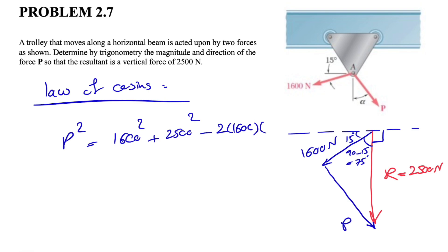...the first vector times the second one, and the angle would be the angle between 1600 and 2500, which is 75 degrees. So it will be cosine of 75 degrees. If we calculate this, we'll get 2596 newtons for P, which is the magnitude of the force P.